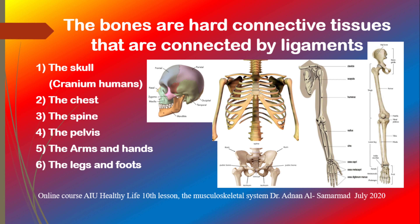The chest starts with the clavicle in the front, and in the back, the shoulder blade called scapula. There are also 12 ribs called costae. The first five are directly connected to the sternum, and five more are indirectly connected, and we have two free ribs.